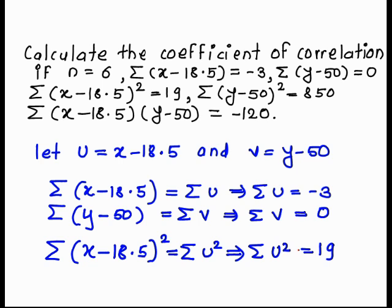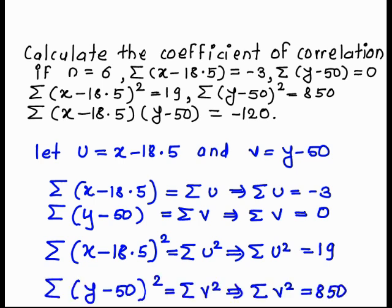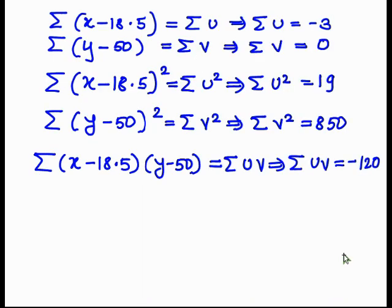Summation of u squared is equal to 19, summation of v squared is equal to 850, and summation of uv is equal to minus 120.